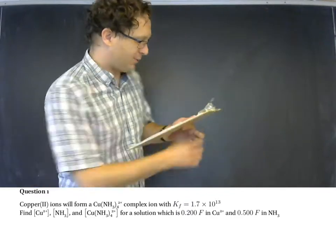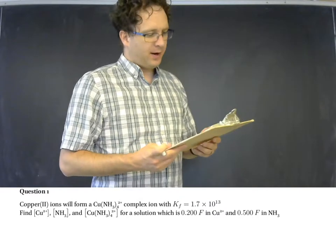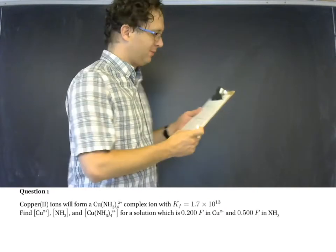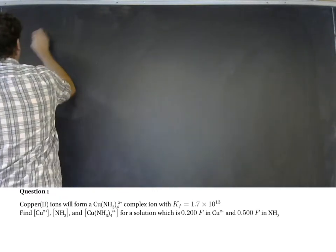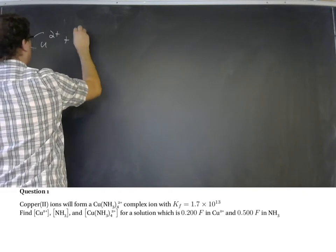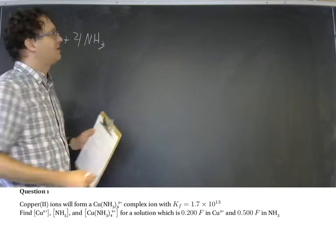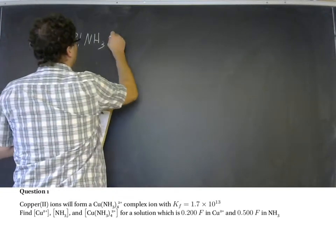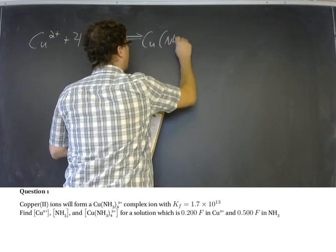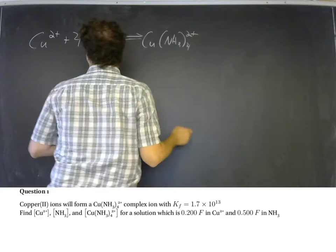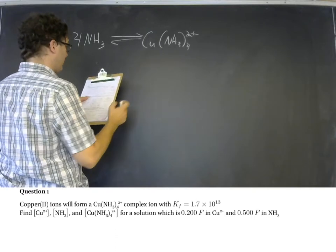Copper(II) ions will form a copper tetramine complex ion with Kf equal to 1.7 times 10 to the negative 13th. So let's write the chemical equation right here. Cu2+ plus 4NH3, and I'll leave off the phases just for board space. These are all aqueous and that's going to form the copper tetramine complex.